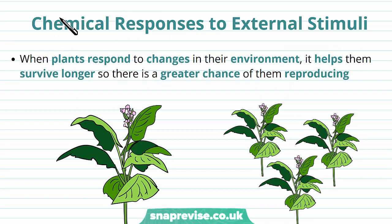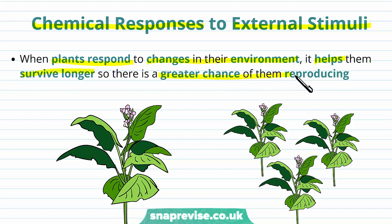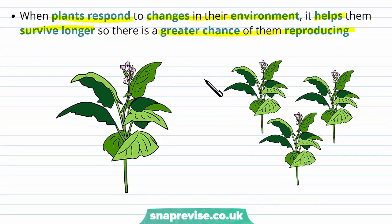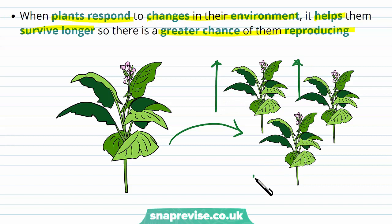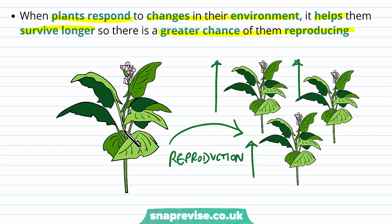When plants respond to changes in their environment it helps them to survive for longer and therefore gives a greater chance of reproducing. Thinking about evolution and the passing on of genes, the longer something survives gives it more opportunities to reproduce, and if it reproduces then the numbers of plants or species with those genes will increase. So responding to potentially fatal environmental changes means plants are more likely to survive, last longer, and reproduce passing on their genes.